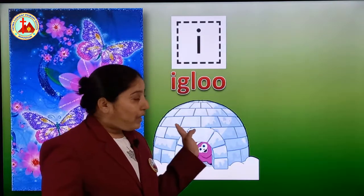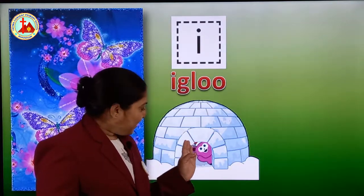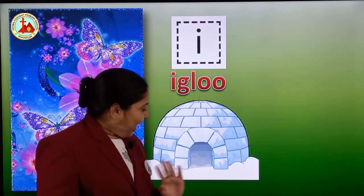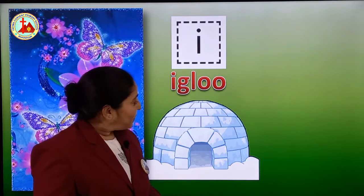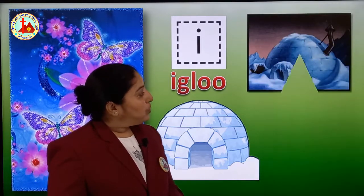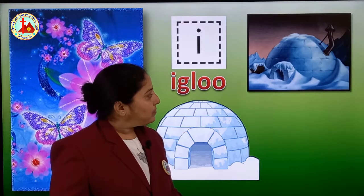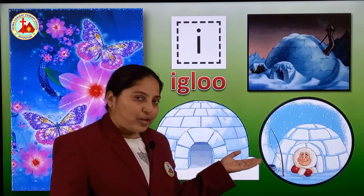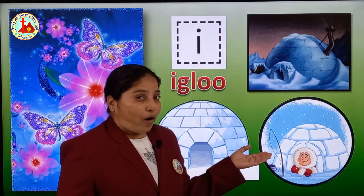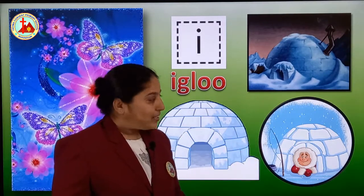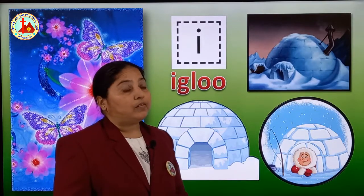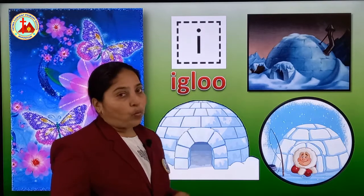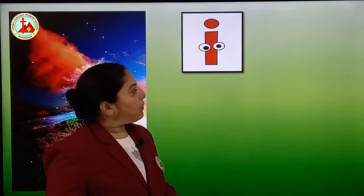Next is I for igloo. See, this teddy is telling you hi from the igloo. I for igloo. You all know, right, what is igloo? Igloo is the house made up of ice bricks. Now let's see the spelling: I, G, L, O, O — igloo. I for igloo.